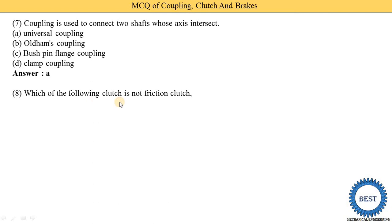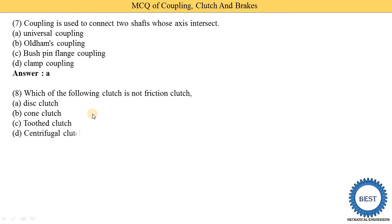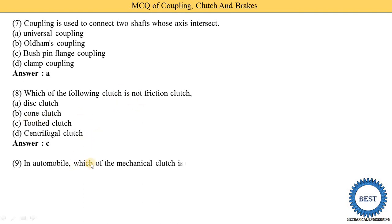Which of the following clutches is NOT a friction clutch? Options: disc clutch, cone clutch, jaw clutch, and centrifugal clutch. Option C is the correct answer — the jaw clutch is not a friction clutch.